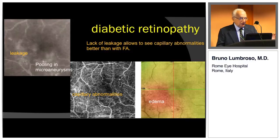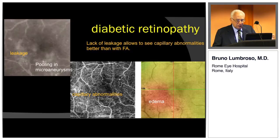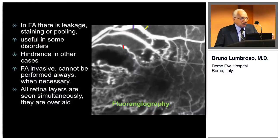On your left you see a fluorescence angiograph with leakage and pooling. In the middle, the Angio OCT shows that the lack of leakage allows us to see capillary abnormalities much better. On the right, the topography map shows edema corresponding to capillary abnormalities in Angio OCT and to leakage in fluorescence angiography.